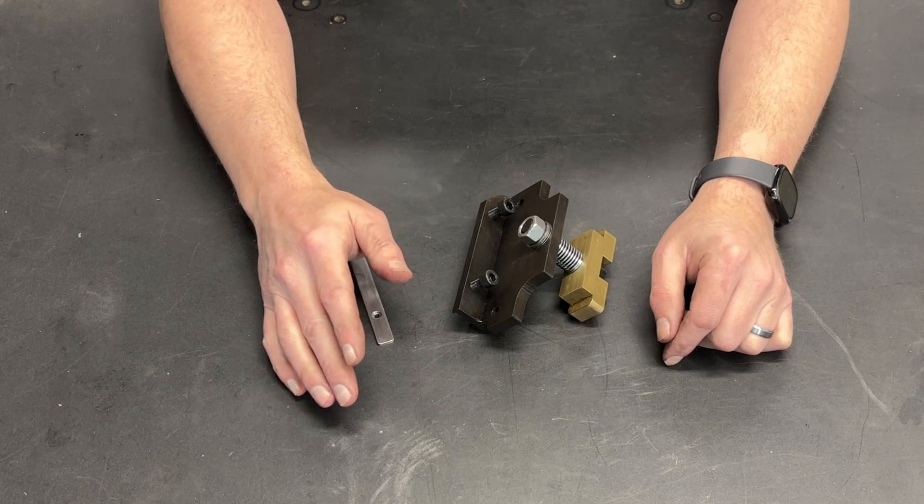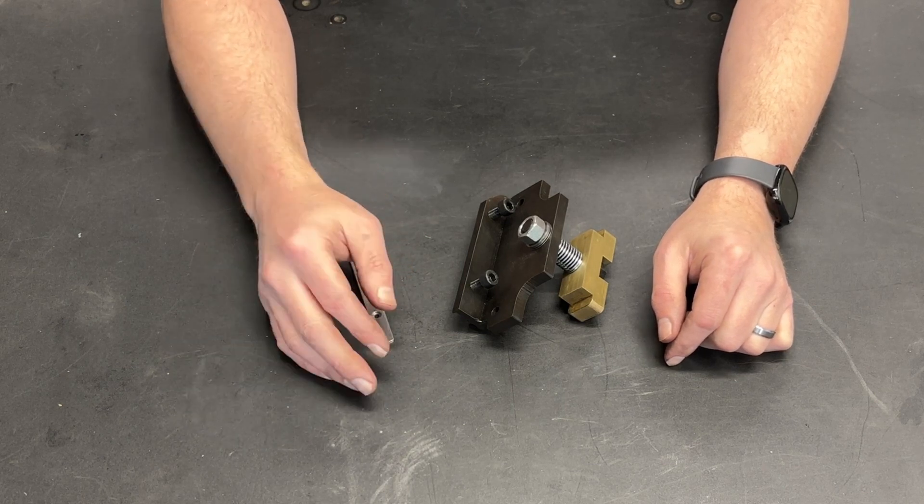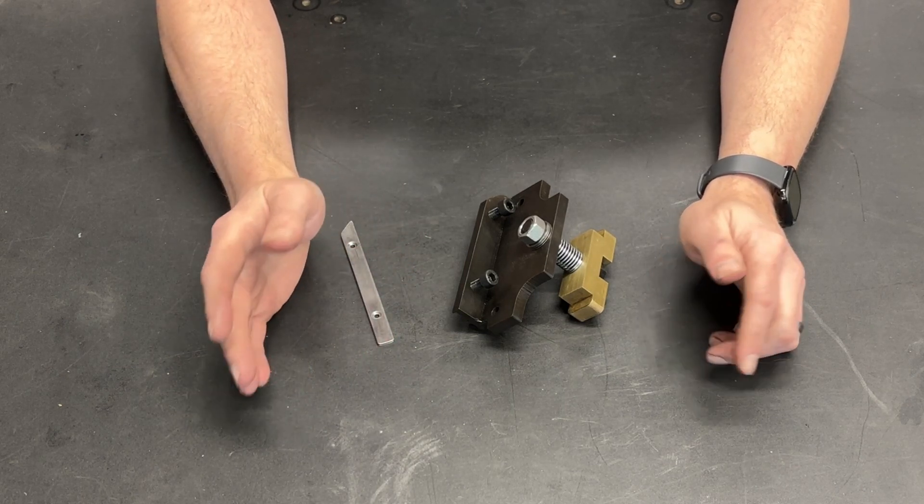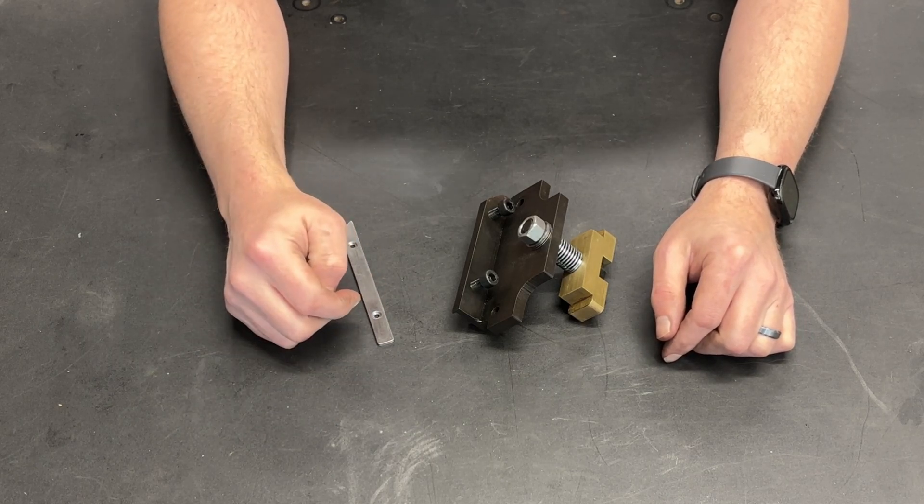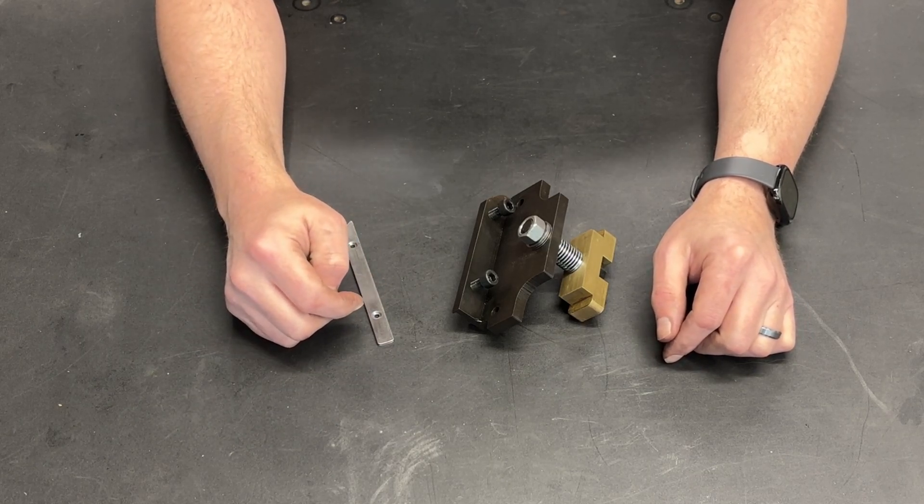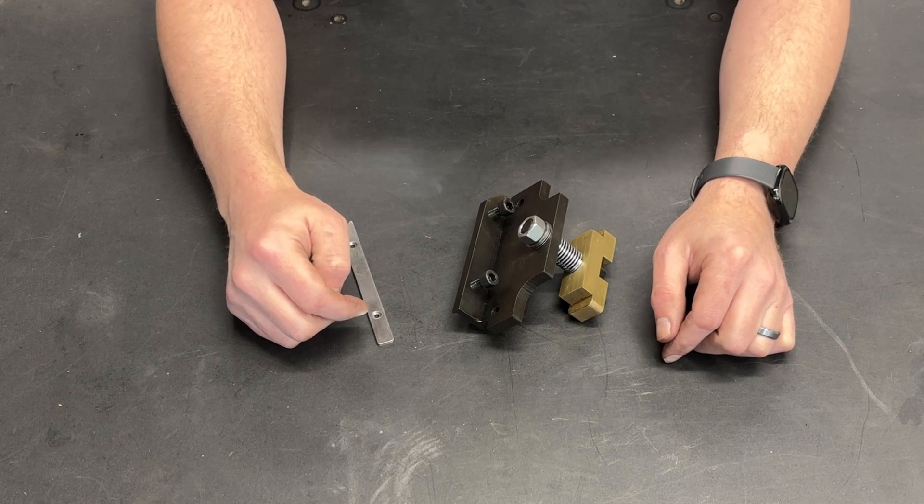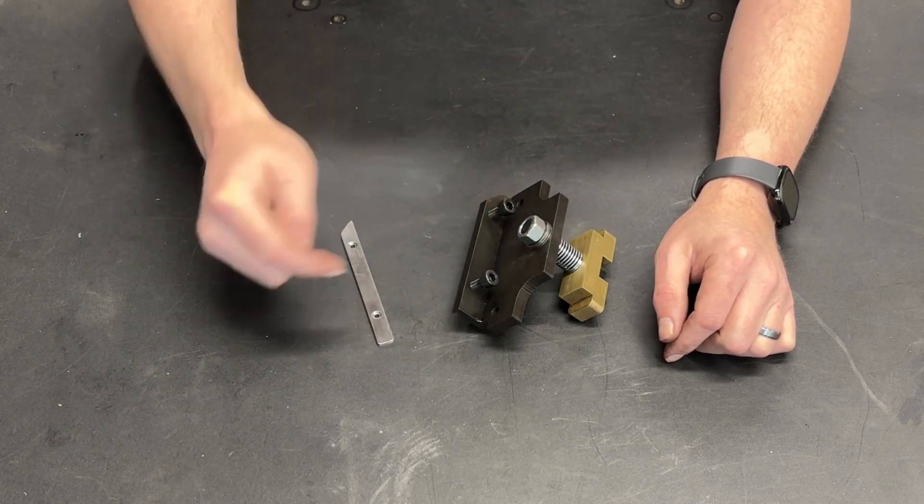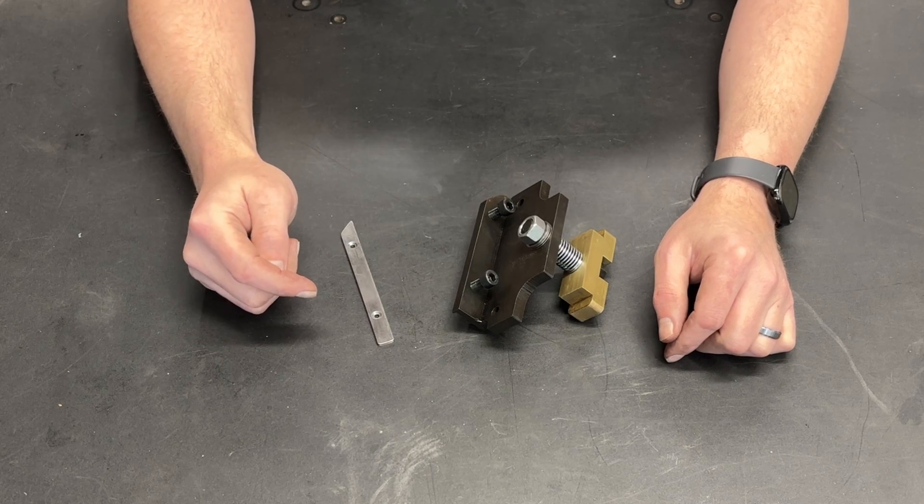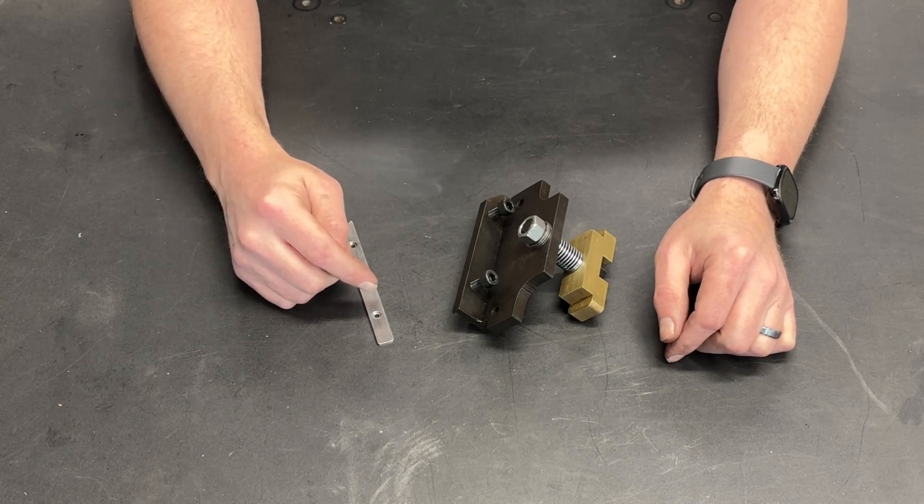I decided that the factory carriage locks, while I can still use them sometimes if I really need to, there has got to be a better way to lock the carriage in both axes. And that's exactly what I set out to do. And this right here is how I am now able to lock the carriage in both axes.